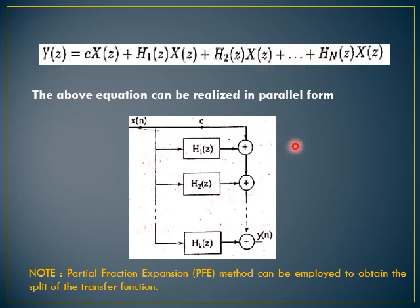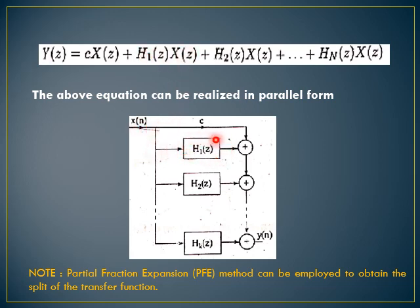By looking at the above equation, we draw the parallel form structure. This is the constant term C which gives C·x(n). We write the expressions of H1(z) and H2(z) individually. We take x(n), multiply by H1(z), and give it to an adder. To this adder we add H2(z)·x(n), and so on, until we add HN(z)·x(n) to get y(n). Note: the partial fraction expansion method is employed to obtain the split of the transfer function.